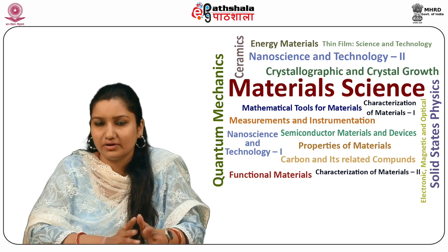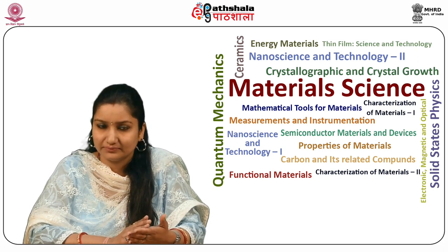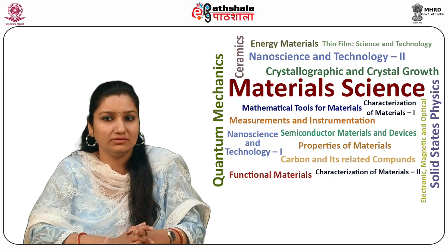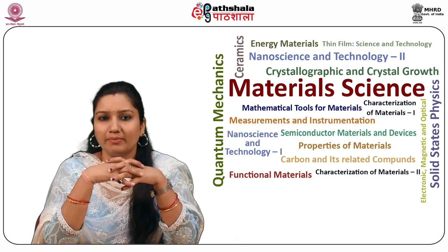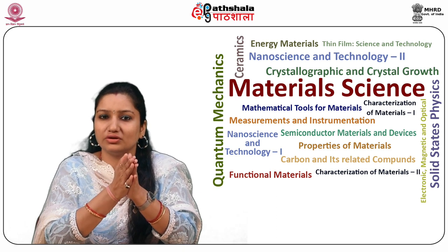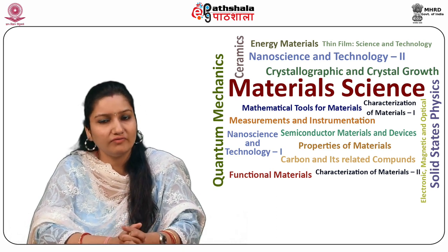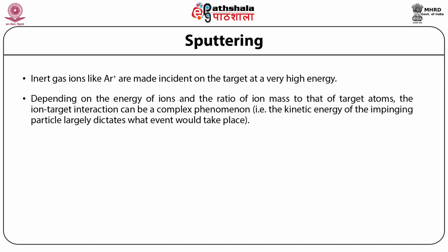Plasma is electrically conductive and is strongly influenced by electric and magnetic fields. It is used to drive ionization, creating a large number of ions and free electrons. Plasma is generated by applying direct current or alternating current voltages, and a bias voltage is applied to the target to promote acceleration of ions.